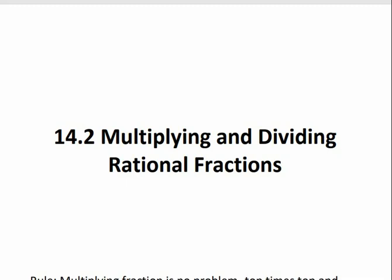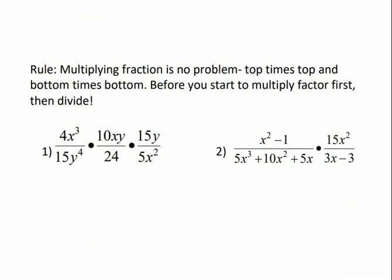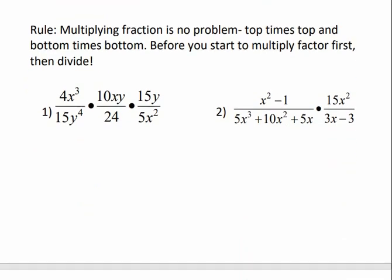14.2, multiplying and dividing rational fractions. When we're multiplying fractions, we do not need a common denominator. All we need to do is multiply the top times the top and the bottom times the bottom. But before we start to multiply, we need to factor first and then divide or reduce our fractions.